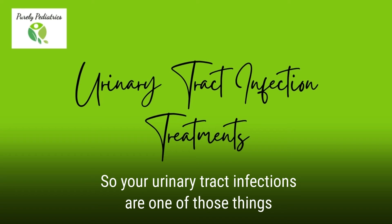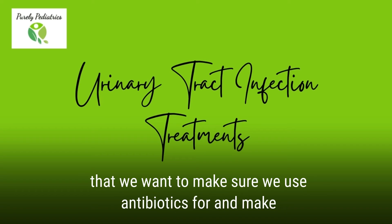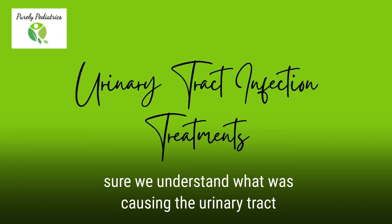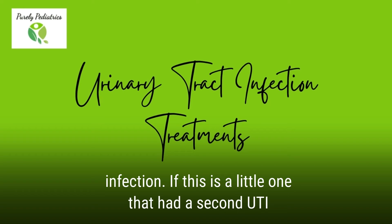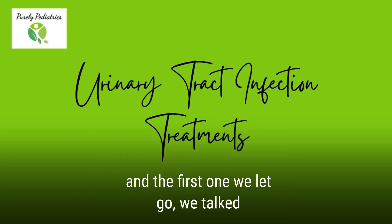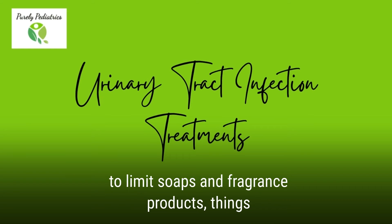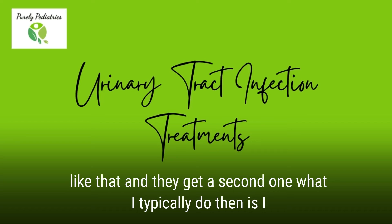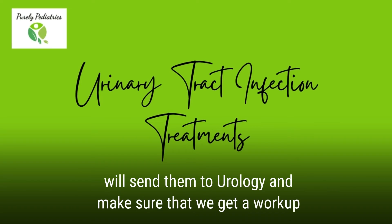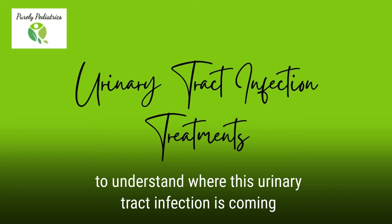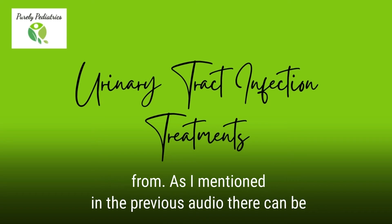Urinary tract infections require antibiotics, and we need to understand what was causing the infection. If a child has a second UTI — and with the first one we discussed constipation, limiting soaps and fragrance products, things like that — and they get a second one, what I typically do is send them to urology to make sure we get a workup to understand where this urinary tract infection is stemming from.